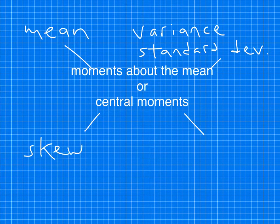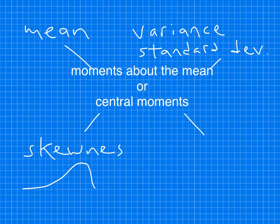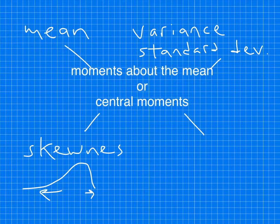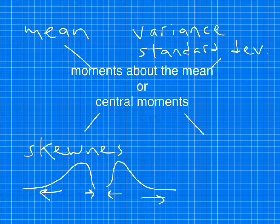Skewness is basically how much a distribution of data skews to the left — you can see there's more of a tail of data to the left and a short tail to the right — or it could be the opposite and have a longer tail to the right than to the left. That kind of difference is measured by skewness.